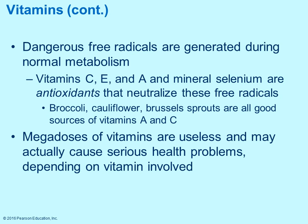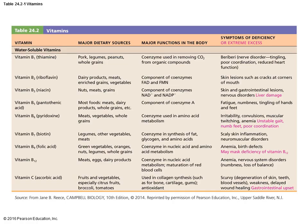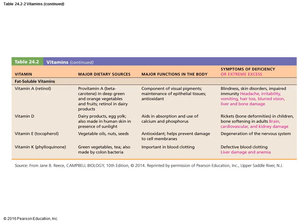During normal metabolism, free radicals are often generated that can cause tissue damage. Some vitamins such as vitamin C, vitamin E, and vitamin A act as antioxidants, meaning they neutralize those free radicals. This table lists first all the water-soluble vitamins — symptoms of excess versus deficiency, their function, and major source — and then the fat-soluble vitamins.